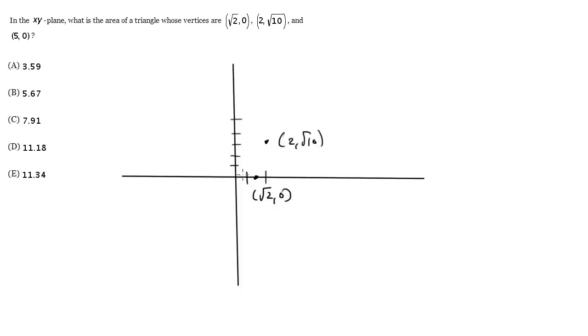And 5, 0, so 1, 2, 3, 4, 5. So we want to know the area of this triangle and let's just draw it out here. So here are the sides.